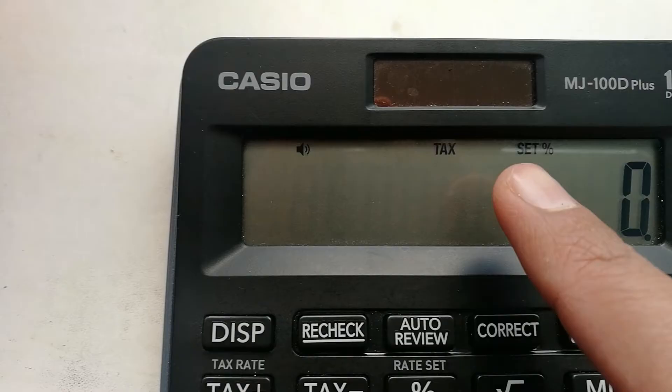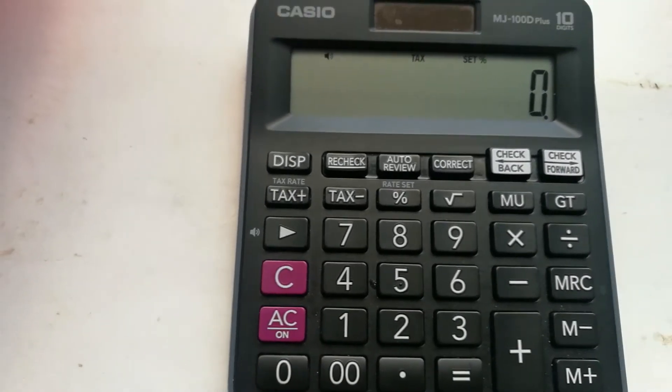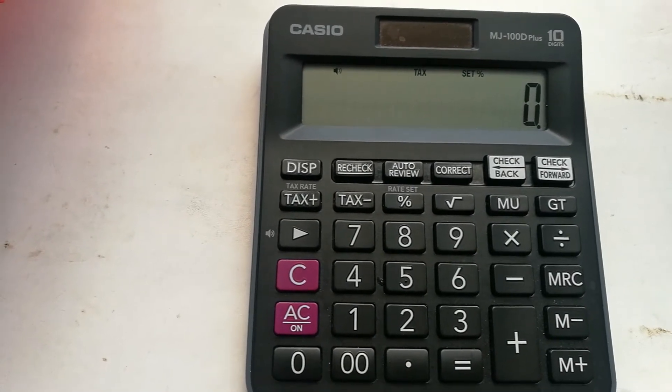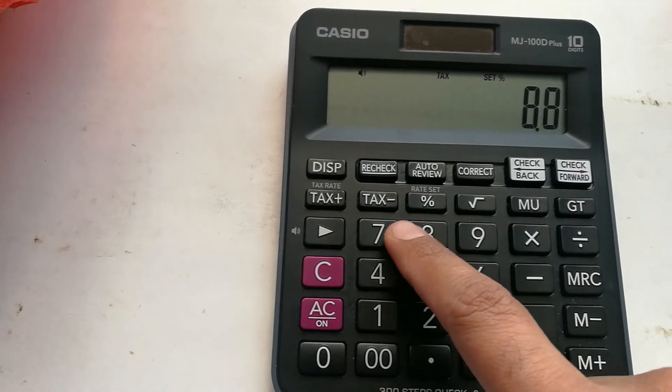When this sign appears on your screen, the next step is you have to set the tax rate, whatever tax rate you want to set. For example, I want to set now 8.875 percent.